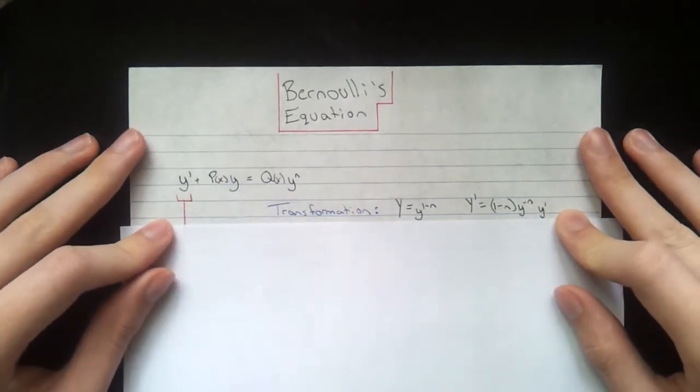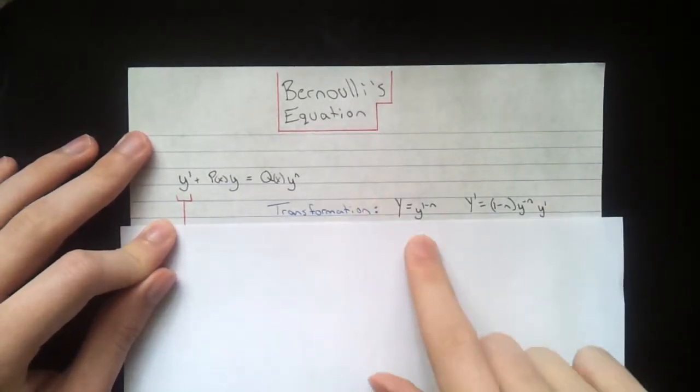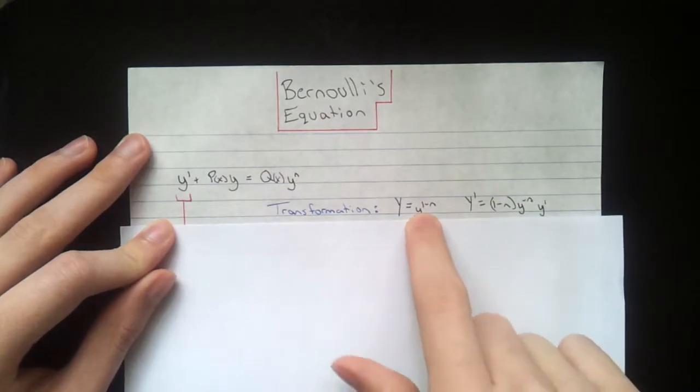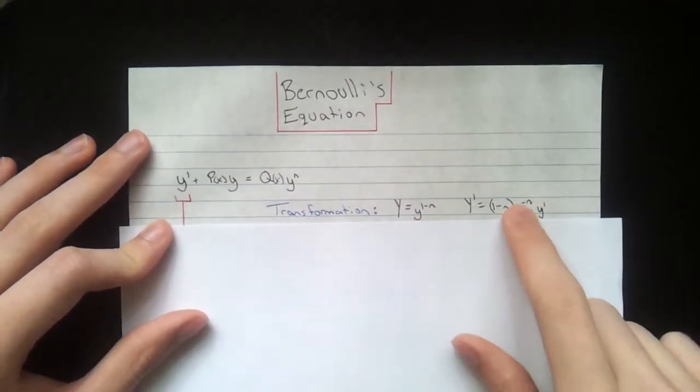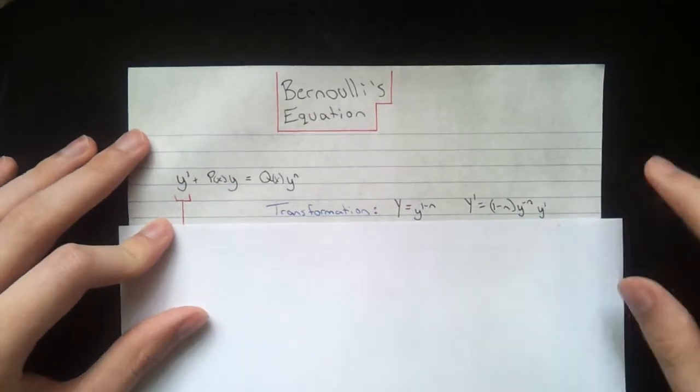The way we solve this is we start with a transformation. We have big y equals little y to the power of 1 minus n. y prime equals 1 minus n times y to the negative n times y prime, just using a little bit of chain rule there.